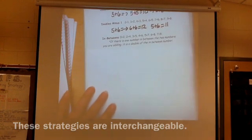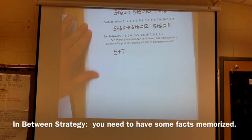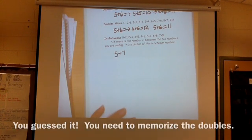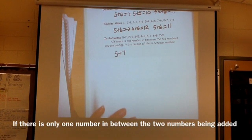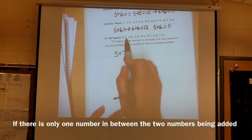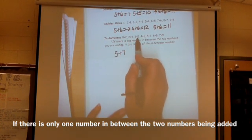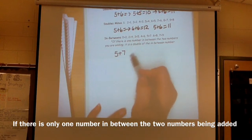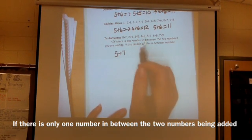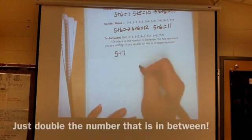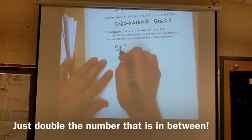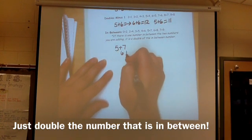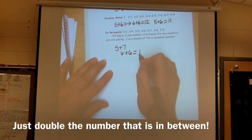The next one that we really want the kids to start using, and the only way they can do this is if they have those doubles memorized, is something we call in-betweens. If there's only one number in between the two numbers, then we call it an in-between, and they can use their double strategy with this again. So, for instance, 0 plus 2 only has 1 in between, 3 plus 4 only has 4 in between. 5 plus 7, well, what's in between 5 and 7? 6 is in between that. So, we tell the kids if there's only one number in between, what you can actually do is take that number that's in between, 5, 6, 7, 6 is in between, and double that. And that's going to be your answer, 12.